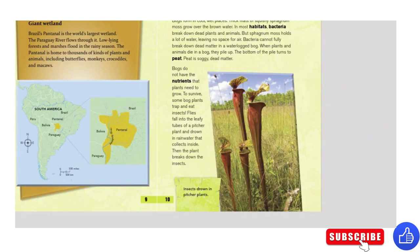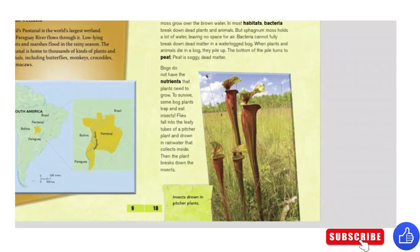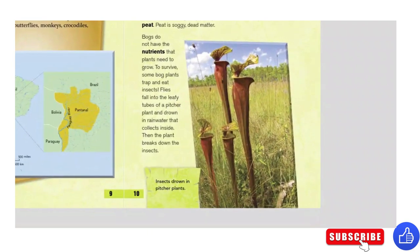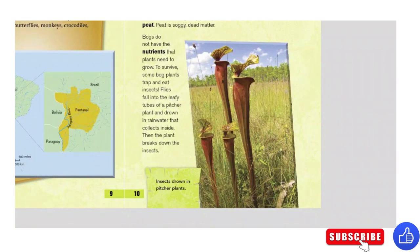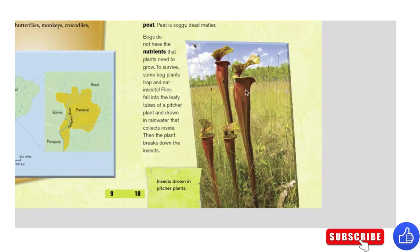Peat is soggy dead matter. Bogs do not have the nutrients that plants need to survive. To survive, some bog plants trap and eat insects. Flies fall into the leafy tubes of a pitcher plant and drown in rainwater that collects inside. Then the plant breaks down the insects. Here are pitcher plants — they eat insects.